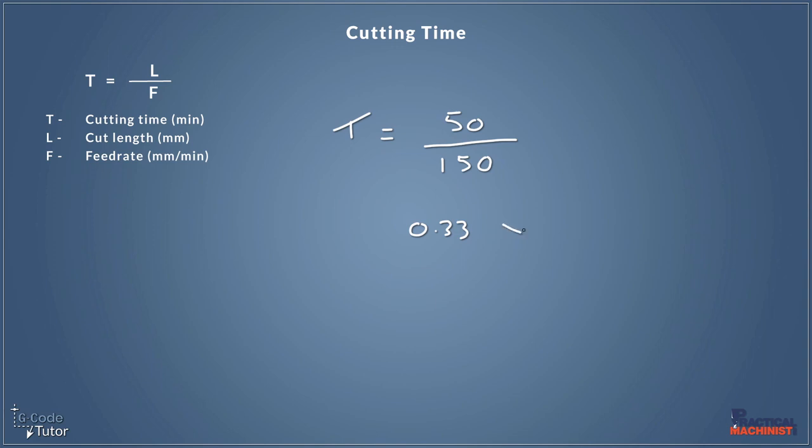So we would times that by 60 to convert that into seconds. So 0.33 times by 60 would equal 19.8 seconds. That's how long it would take us to cut 50 millimeters at a feed rate of 150 millimeters per minute.